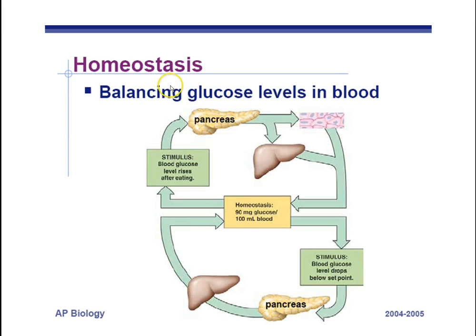Homeostasis — maintaining a stable internal environment — is a theme in biology called regulation. Remember, we have two types of regulation: positive feedback, where you increase an effect, and negative feedback, where you reverse an effect as a result of producing something. Is this negative feedback or positive feedback? Are we increasing a trend or reversing a trend?